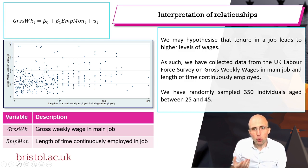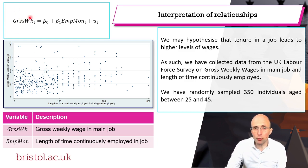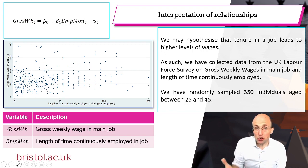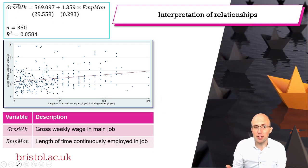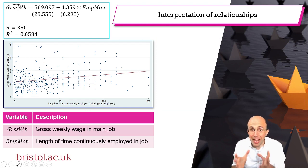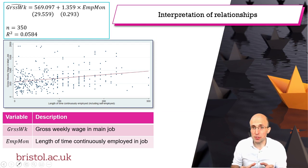We want to run a regression of gross weekly wages as our dependent variable and months continuously employed as our explanatory variable. If we do this, we get results that look something like this. But how do we go about carefully interpreting these regression results?